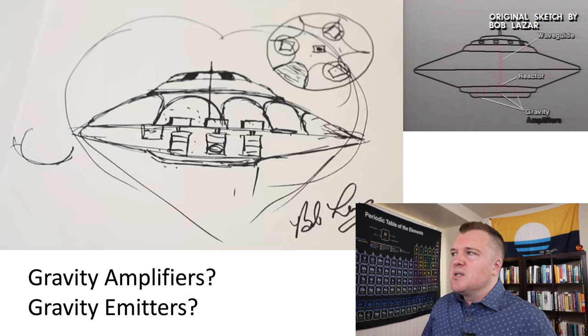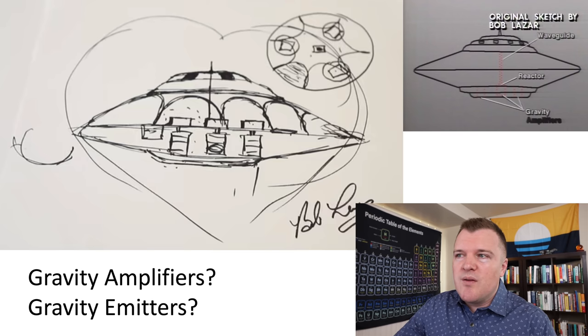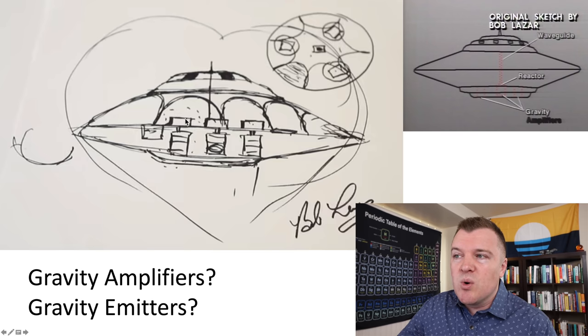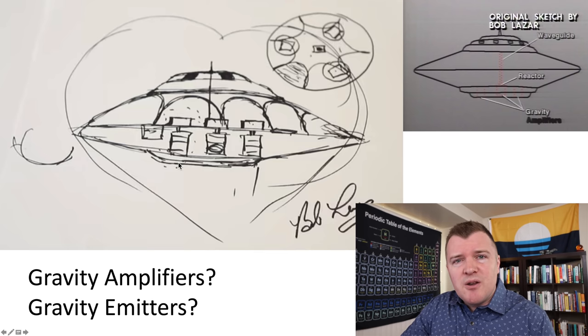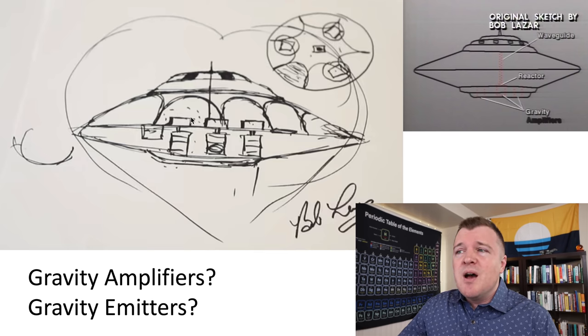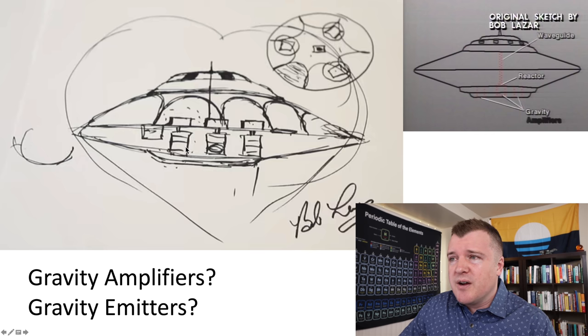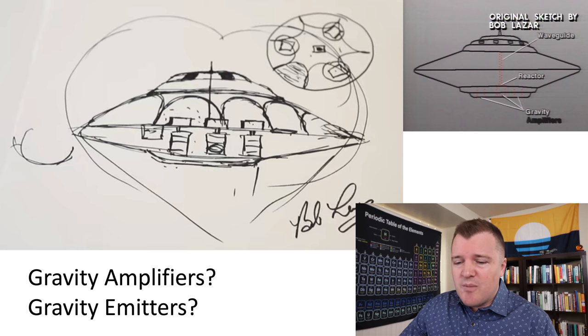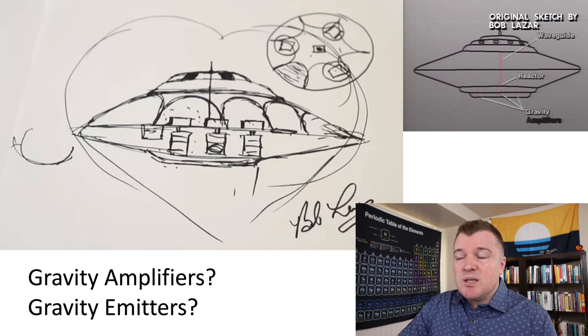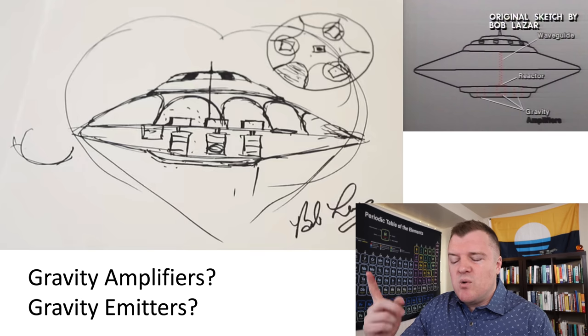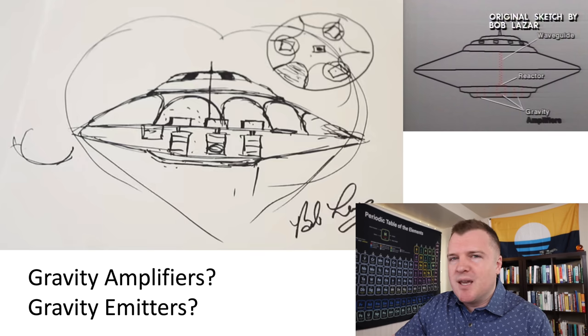The possibilities here is one, he doesn't know. They were never allowed to take apart or dissect this part of the ship. Two, it's just beyond our comprehension. Maybe they have opened up the gravity amplifiers and gravity emitters, and it's just a complete mystery how these things work. Or once again, Bob knows and he doesn't want to explain for some reason. Or once again, Bob's just making it all up.